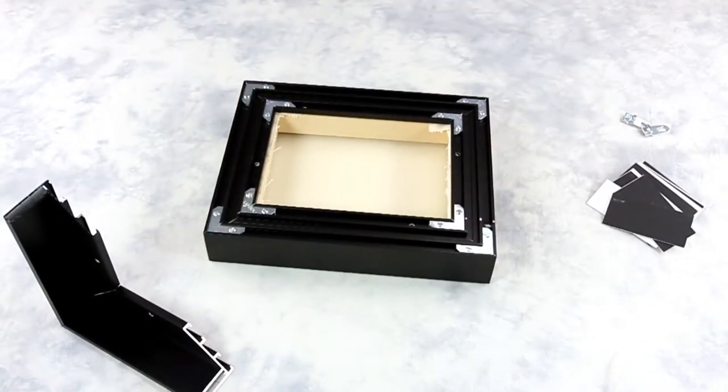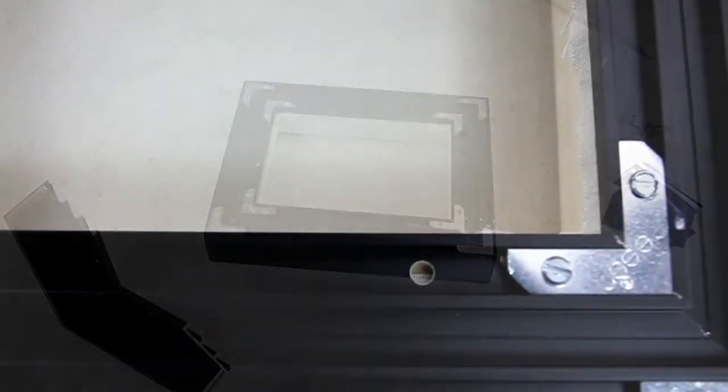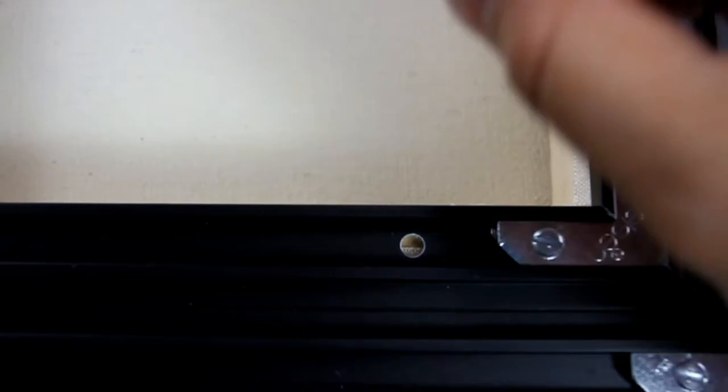Once you have achieved an even gap, flip it over and you can use the holes that are provided around the frame and use a screwdriver and drill into those holes.